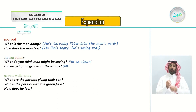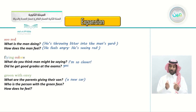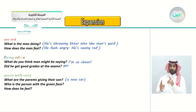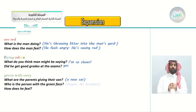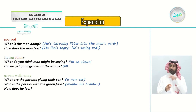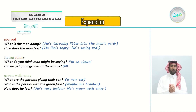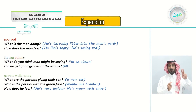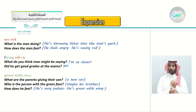Green with envy - what are the parents giving their son? A new car. Who is the person with the green face? Maybe his brother - we are just guessing here. He is very jealous. He is green with envy. Envy means that you wish you had what others have - you are jealous of them.